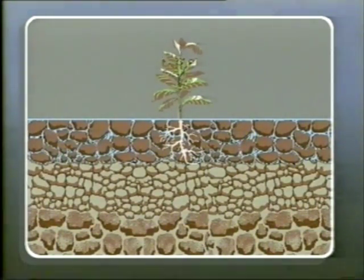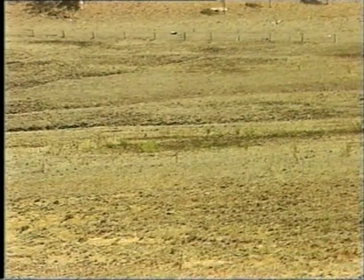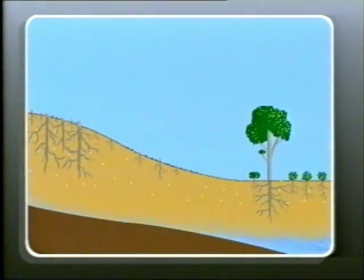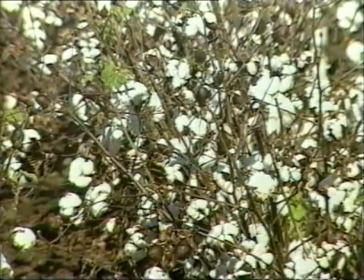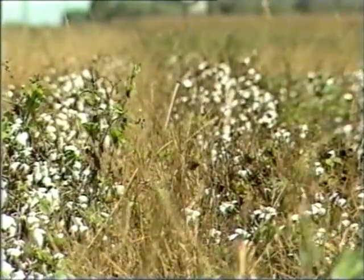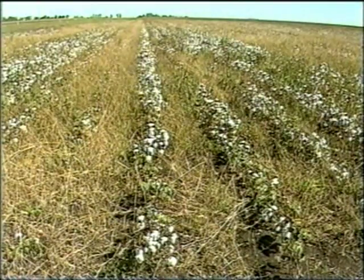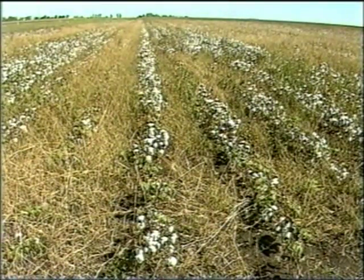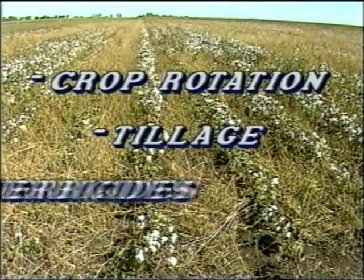On the other hand, where water is able to filter into the soil but there are no plants to make full use of it, the excess water moves down the slope to flatter areas. This can cause water tables to rise and bring salts to the surface. Even water that is stored in the soil under good growing conditions can be wasted by useless weeds. Weed control to prevent competition for water can be achieved in several ways, including crop rotation, tillage and herbicides.